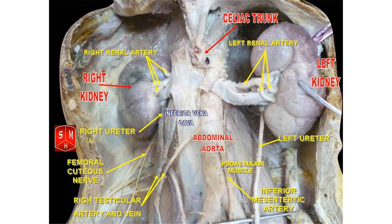The testicular artery is a branch of the abdominal aorta that supplies blood to the testis. It is a paired artery, with one for each of the testes. It is the male equivalent of the ovarian artery. Because the testis is found in a different location than that of its female equivalent, it has a different course than the ovarian artery.